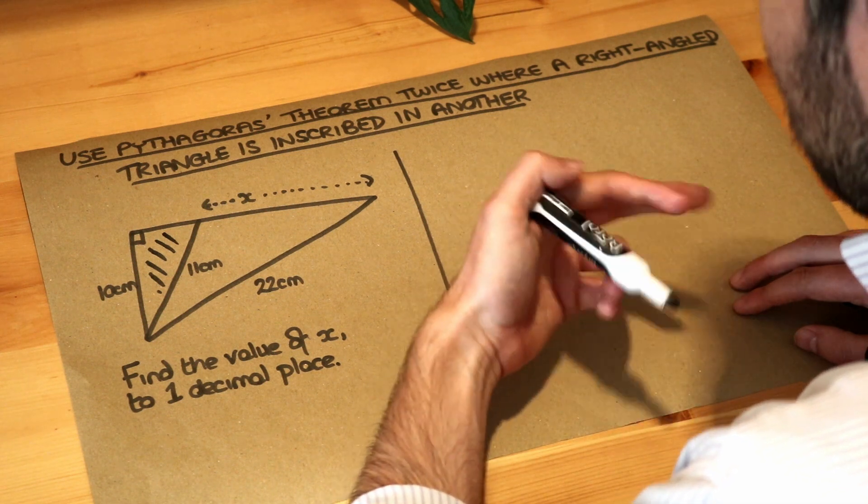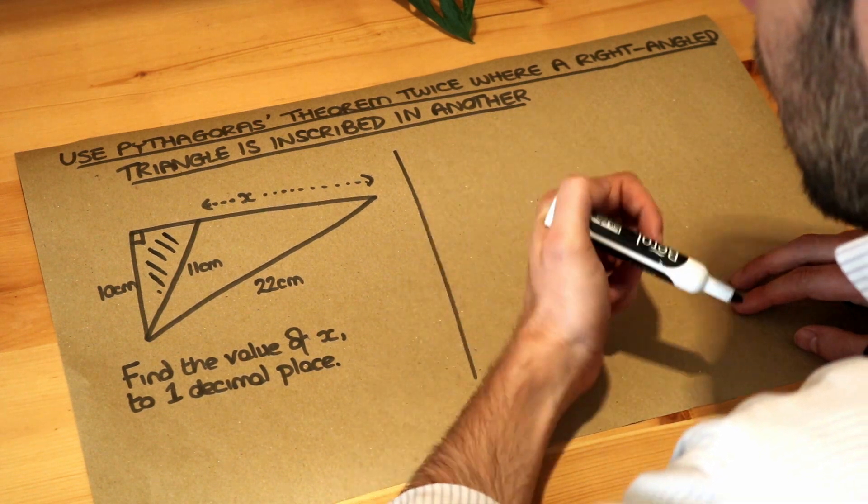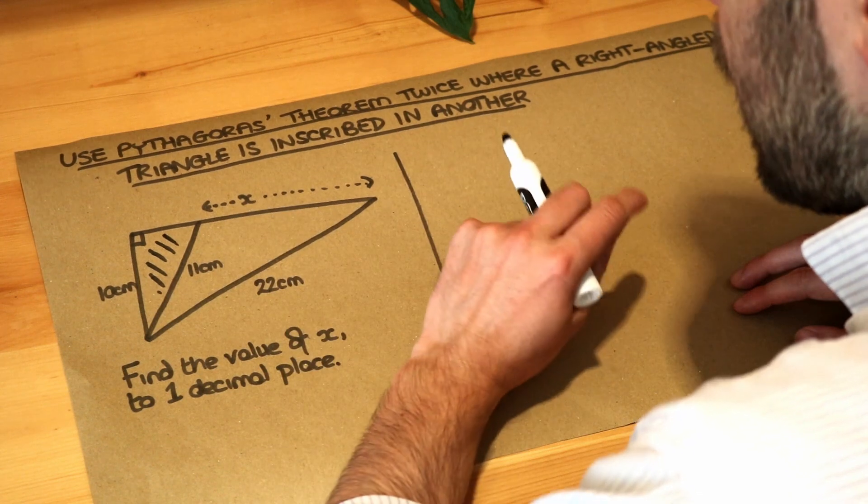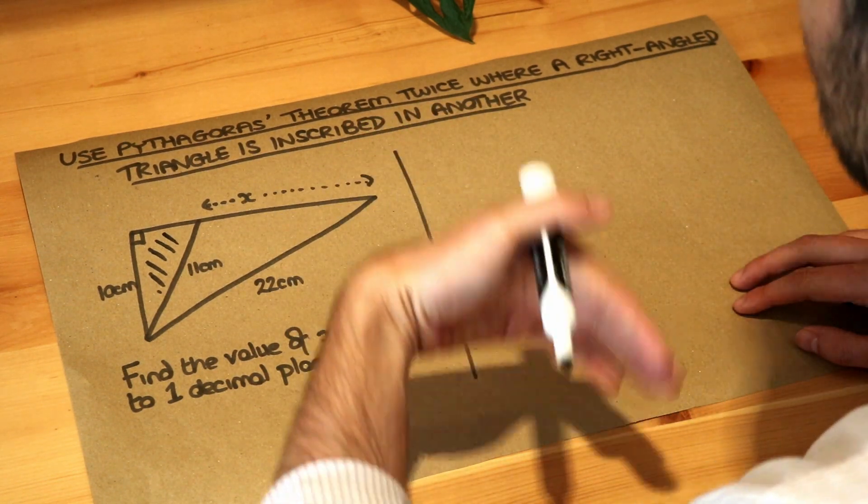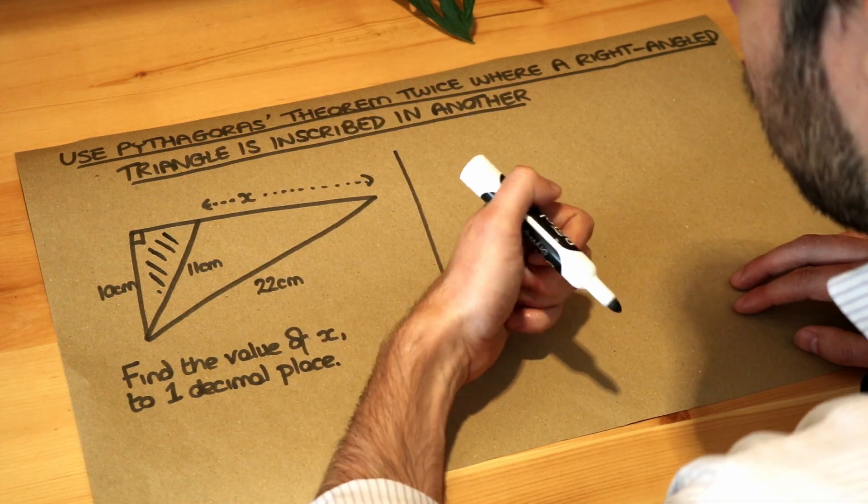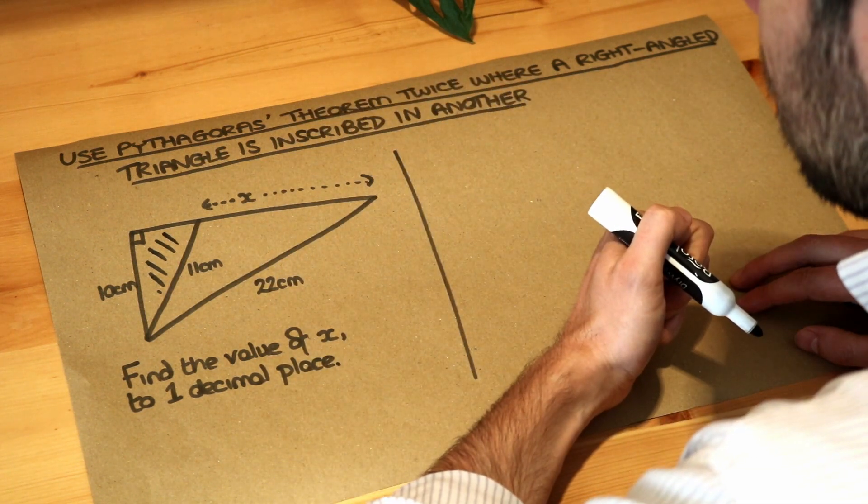So we're going to have to use Pythagoras twice probably to relate the two triangles. We want to work out the value of x. Now always with this kind of problem, just think what information you know. If we had two sides of a right-angled triangle, we know we can use Pythagoras theorem to find the third.